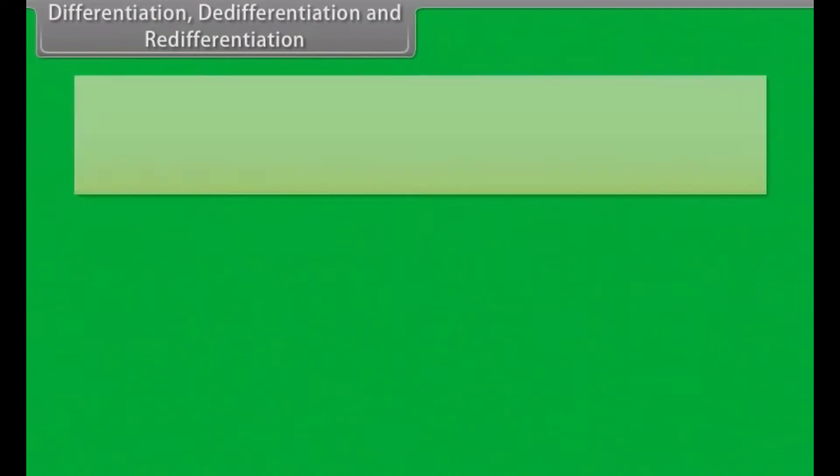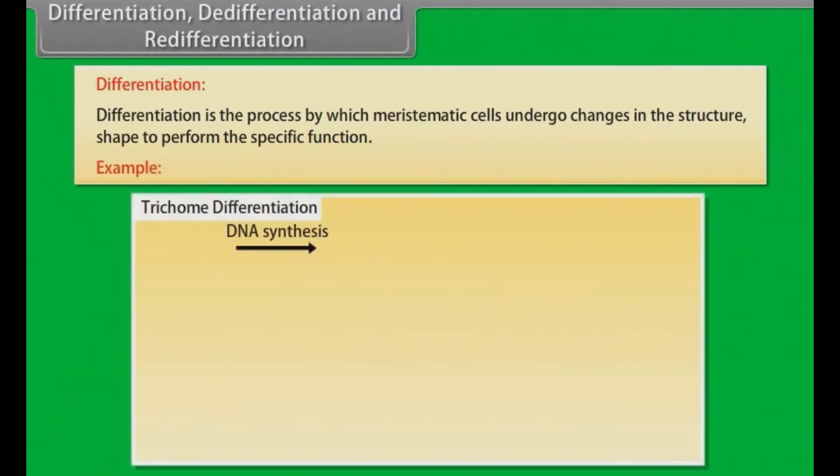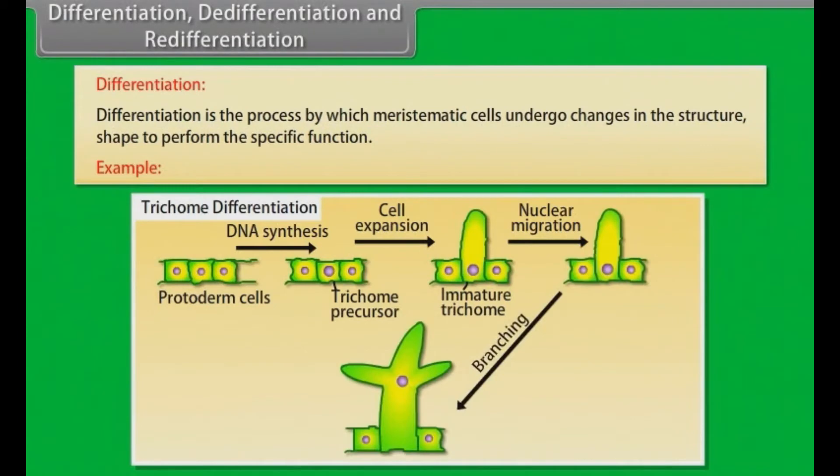Differentiation, De-differentiation and Redifferentiation. Differentiation is the process by which meristematic cells undergo changes in the structure, shape to perform the specific functions. For example, after the DNA synthesis of the protoderm cells, cell expansion takes place and it forms immature trichome. After that, nuclear migration takes place and then branching occurs and then it reaches to maturation stage.